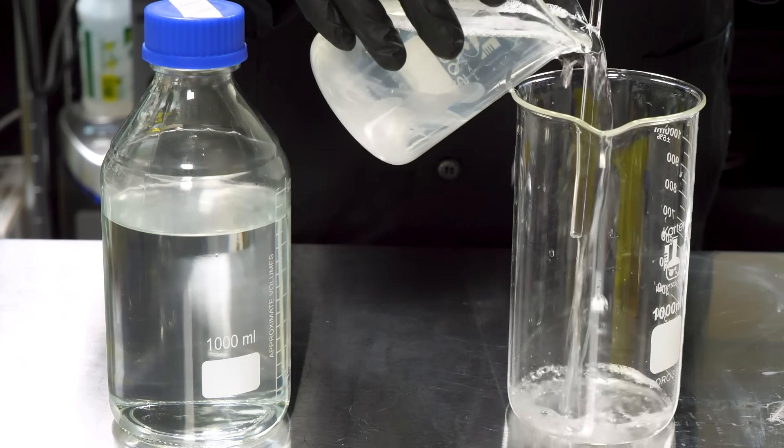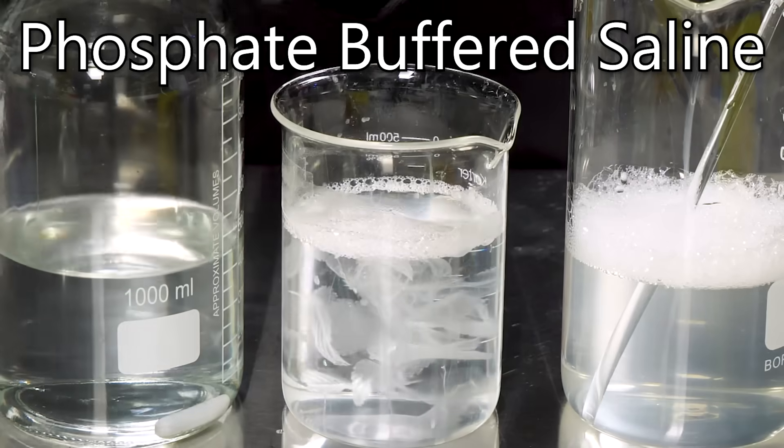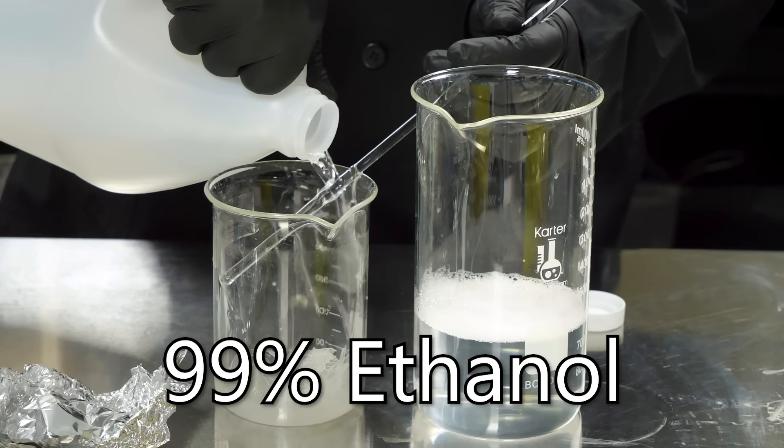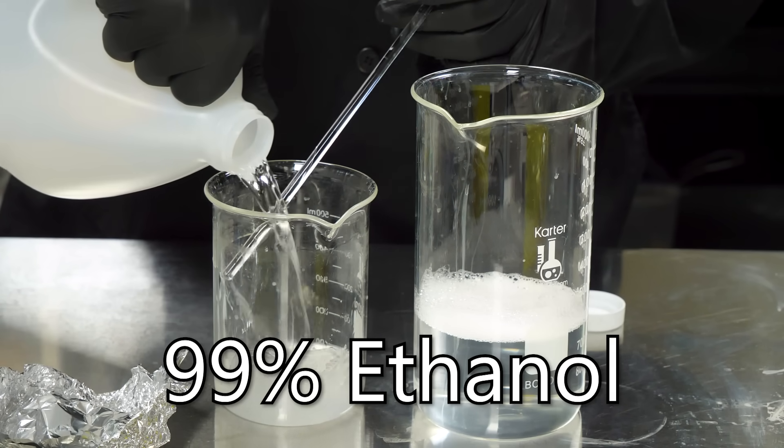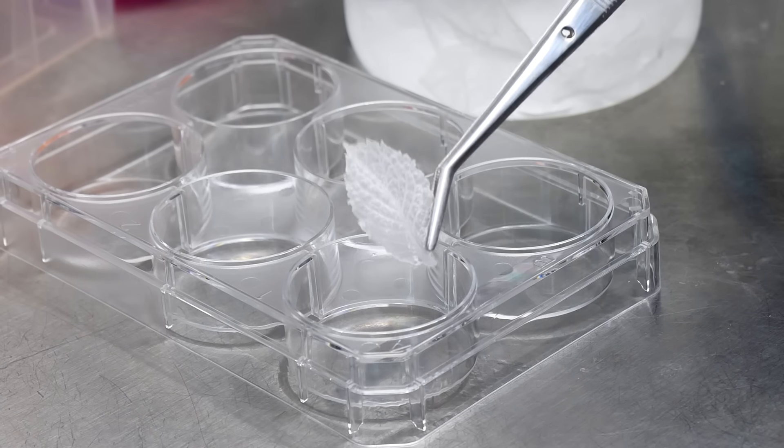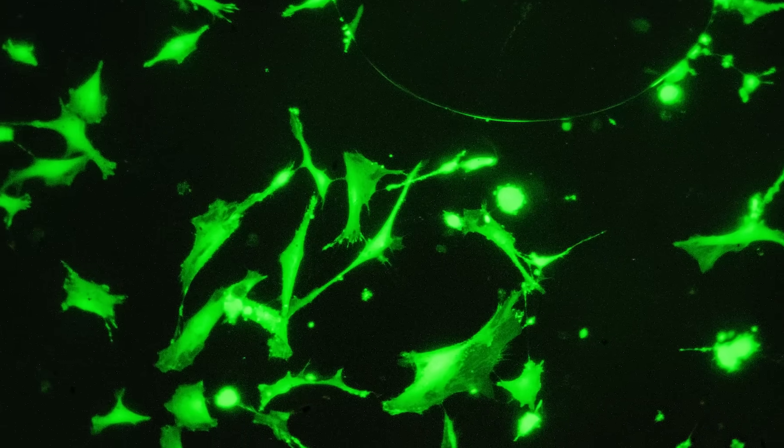To get rid of the excess bleach, the leaves are washed several times with phosphate-buffered saline. Then the liquid was drained, and 99% ethanol was added to sterilize the leaves and preserve them until we needed them. But with that, the scaffolds are done and ready to accept new cells. As I mentioned earlier, we're going to be using fibroblasts.